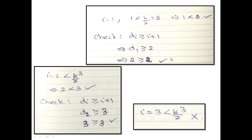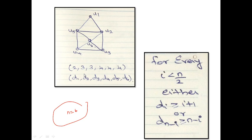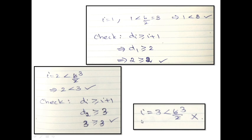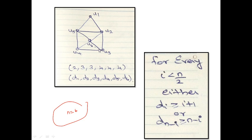Next, take i = 2: check 2 < n/2 = 3, yes. Check di ≥ i+1, that is d2 ≥ 3. The value of d2 is 3, so 3 ≥ 3 — satisfied. Now take i = 3: 3 is not less than 3, so we stop. Since for every i less than n/2 the condition is satisfied, we can say that this graph is Hamiltonian.